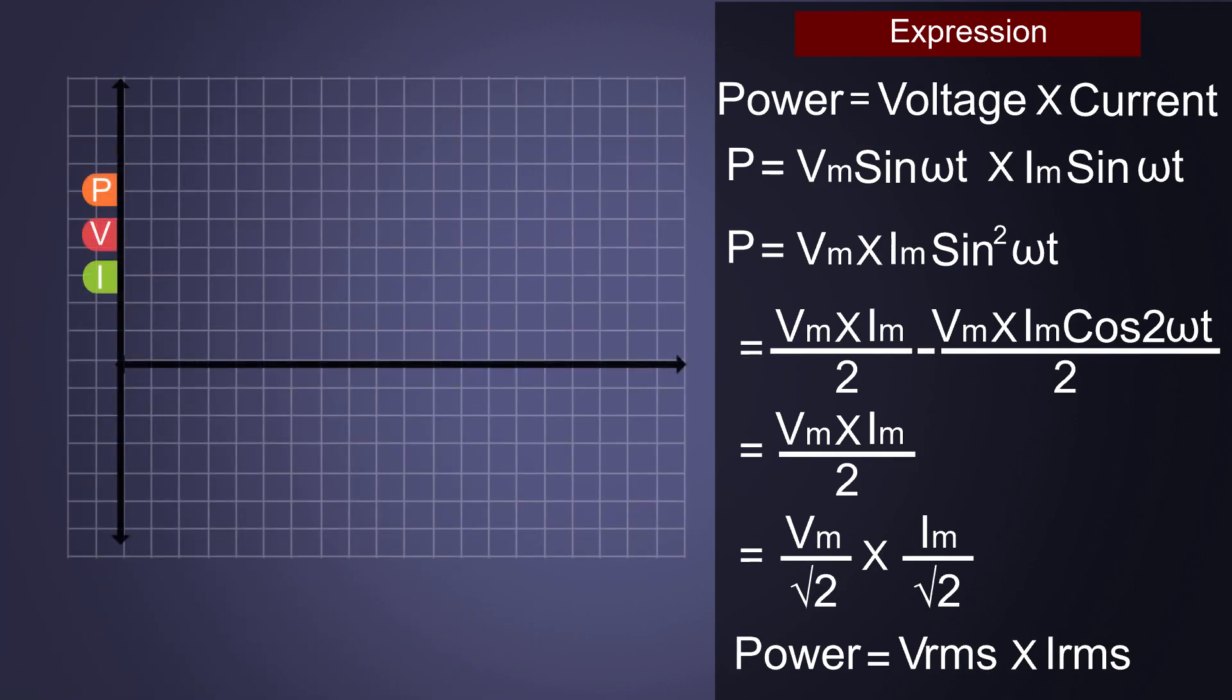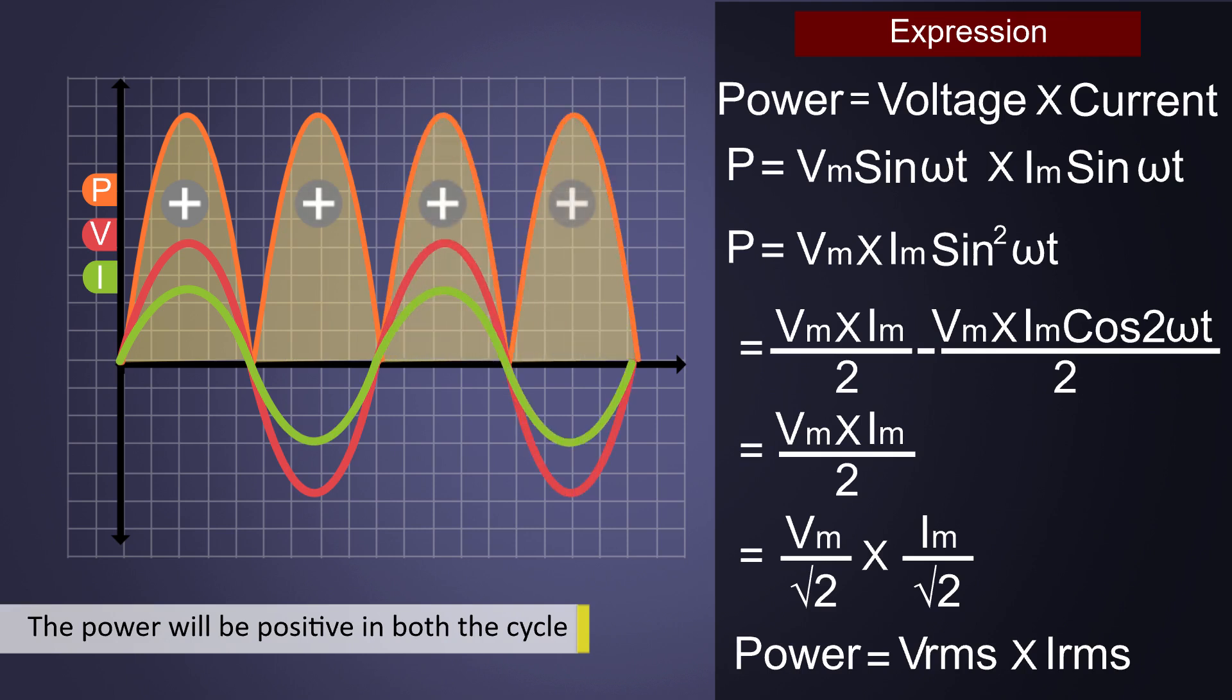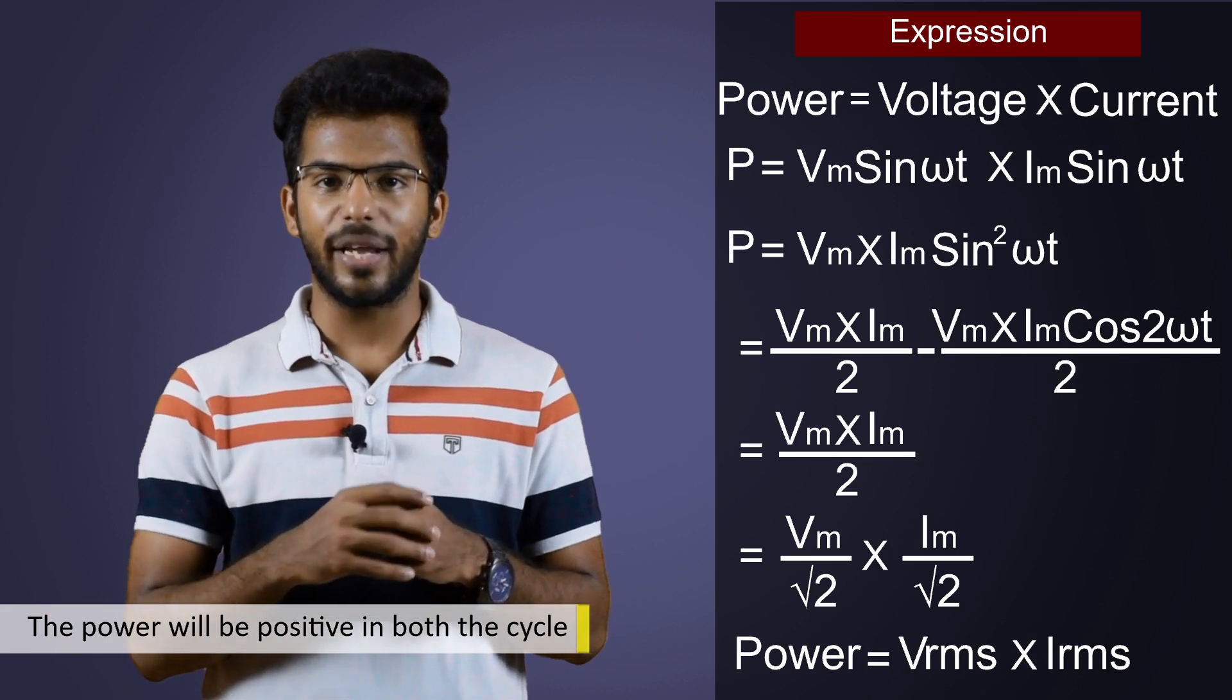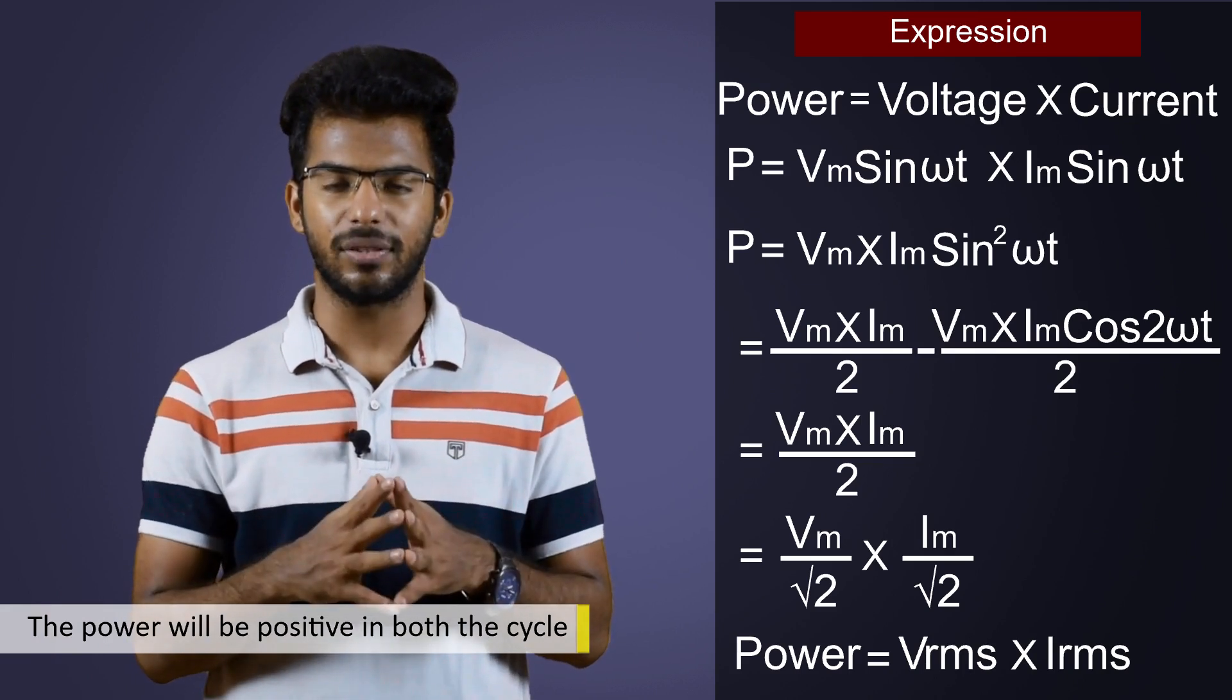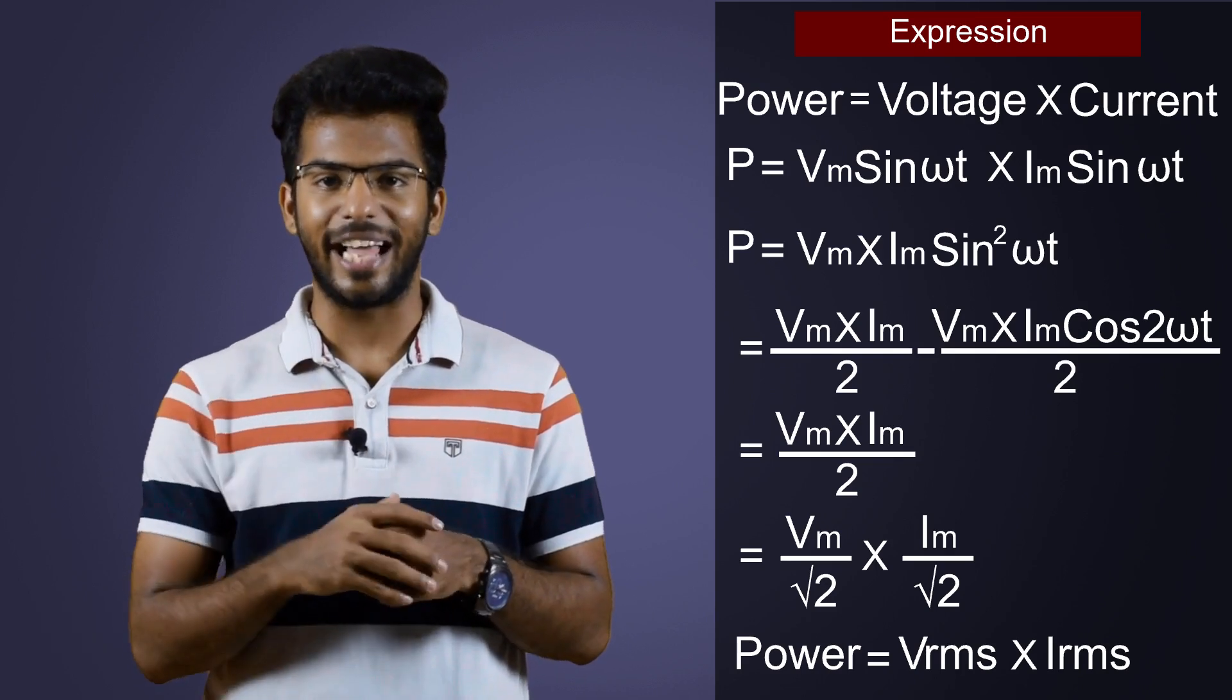In the power curve, the power will be positive in both the cycle. In negative cycle, though the voltage and current are negative, we get power as positive because a negative value multiplied by another negative value will always be positive. This is all about AC circuit with pure resistance. Understand the expression for voltage and current and then derive power.